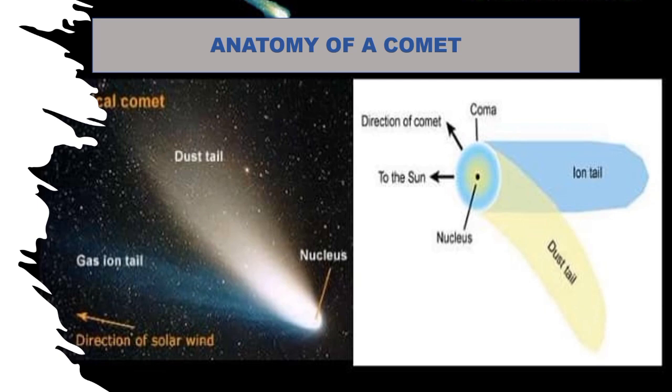Let us know more about the anatomy of a comet. A comet has parts. It has a coma, which is the nebulous envelope around the nucleus of a comet, formed when the comet passes close to the Sun on its highly elliptical orbit.